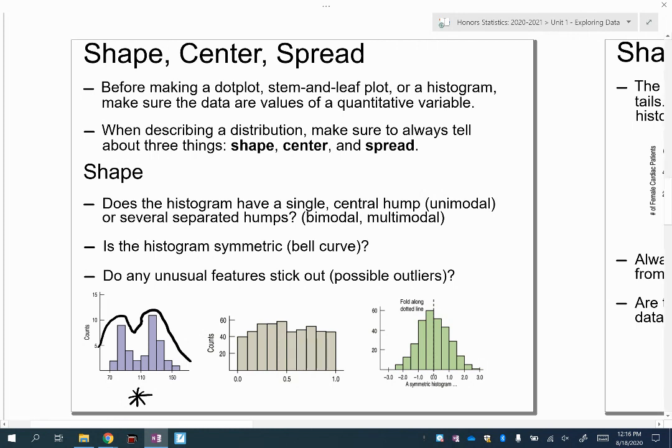In terms of another way to describe the shape, if the histogram is symmetric, so if you drew a line down the middle and it roughly looked the same on both sides of that line, like this one in green, you would say it's roughly symmetric. In terms of any unusual features, we call these possible outliers. If anything is far away from the middle of your distribution in either direction, then you could mention a possible outlier. This one in the middle, this gray-brown one, is called a uniform histogram, where all of the bins, all the bars, the height of those bars for each bin is roughly the same height. That's what we call a uniform distribution.